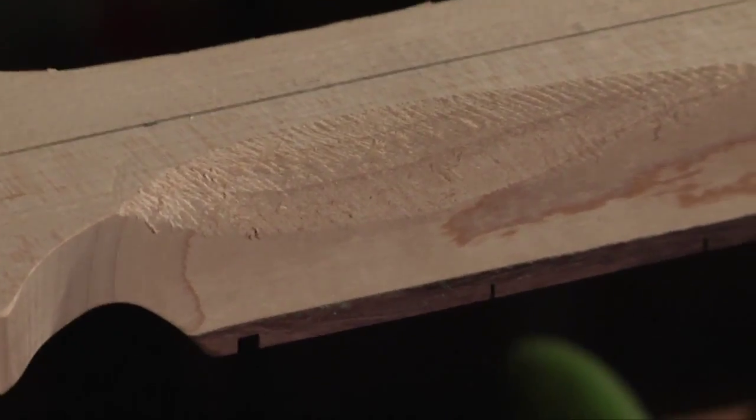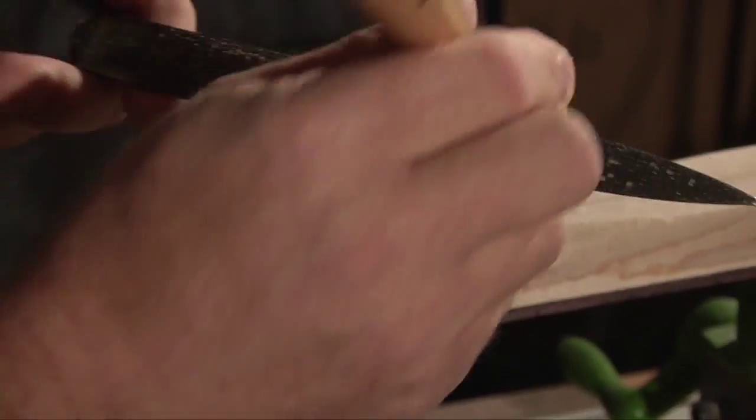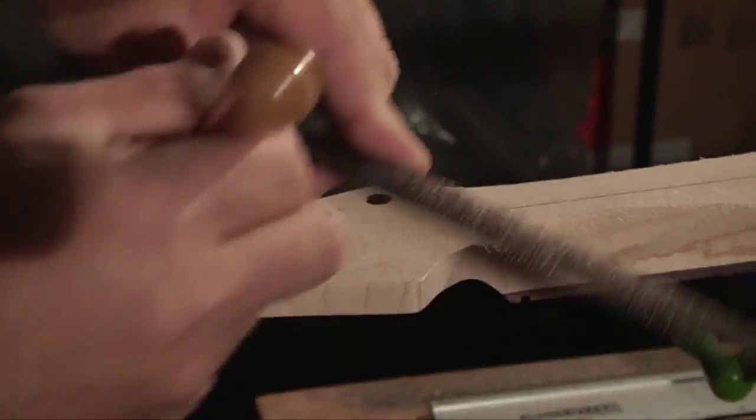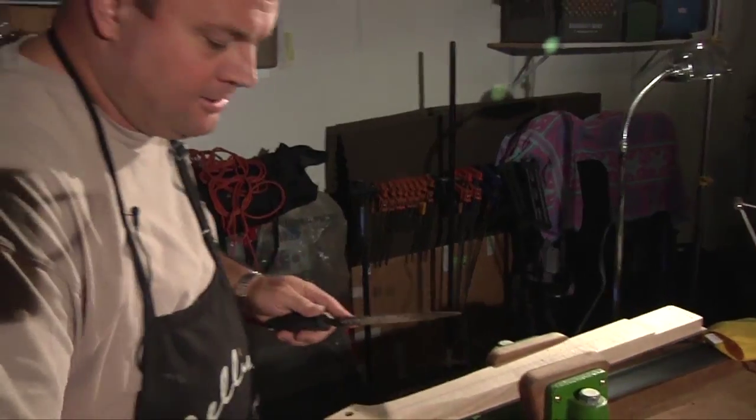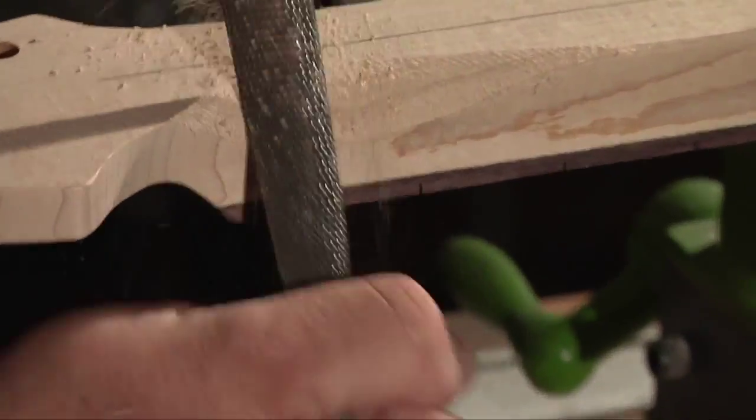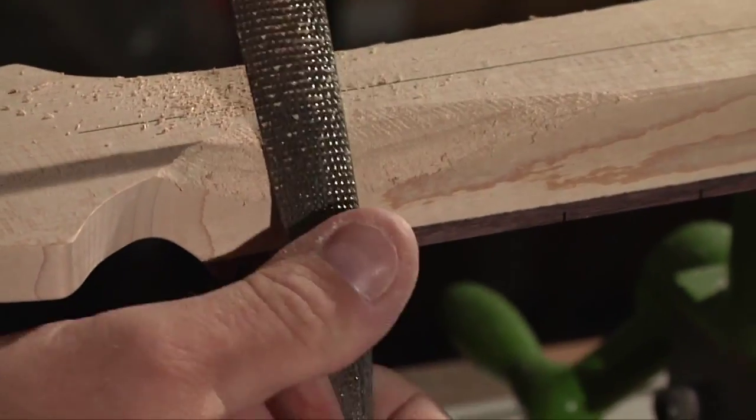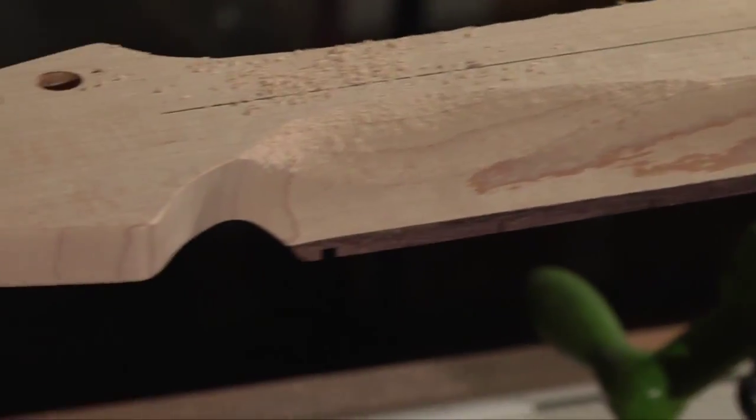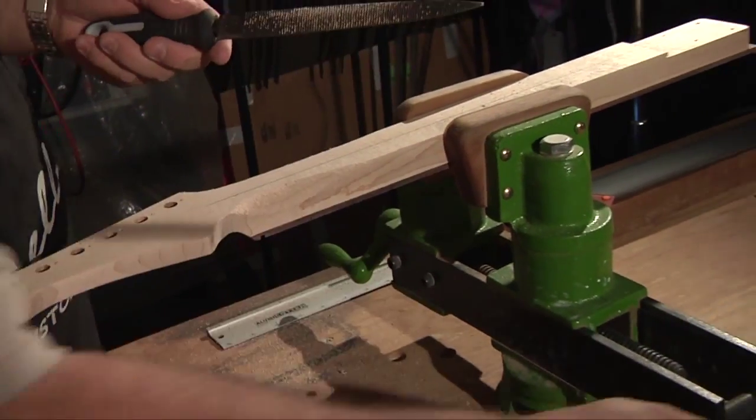So I start with the coarse Chinese rasp here, they're all handmade, they don't chatter as much. Get through this maple, this is quarter sawn maple by the way, the way it's cut it's quarter sawn, a lot more rigid.